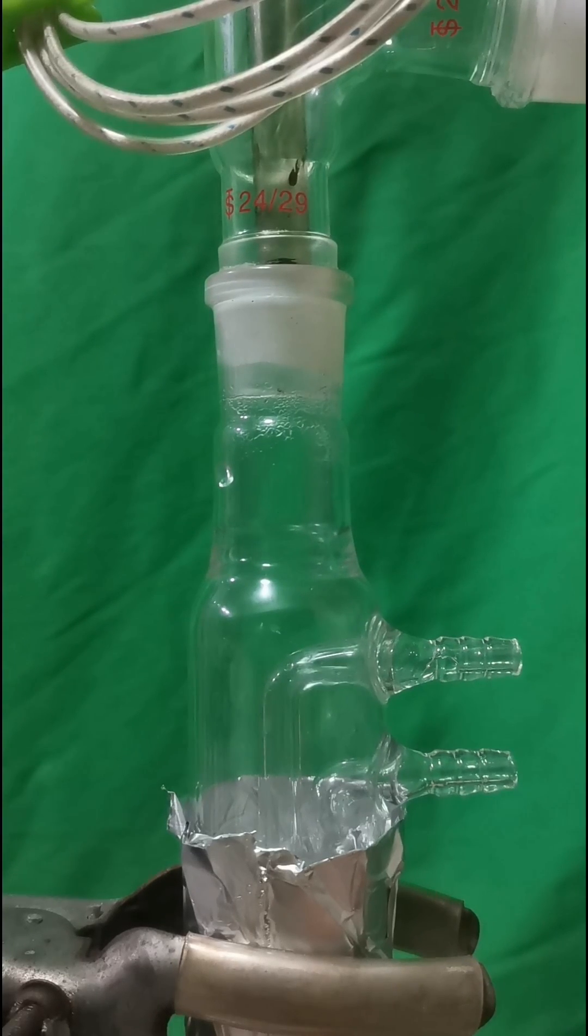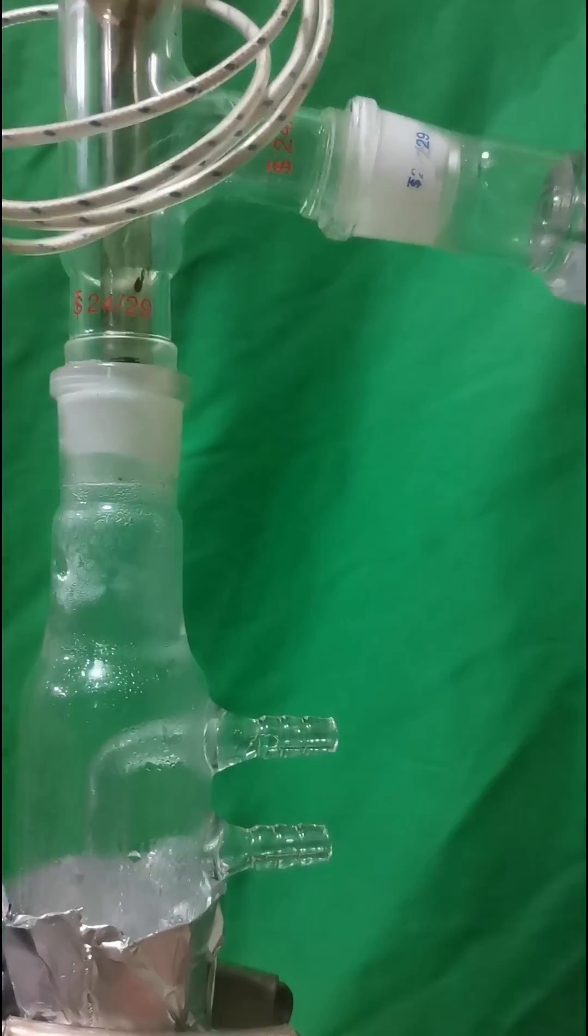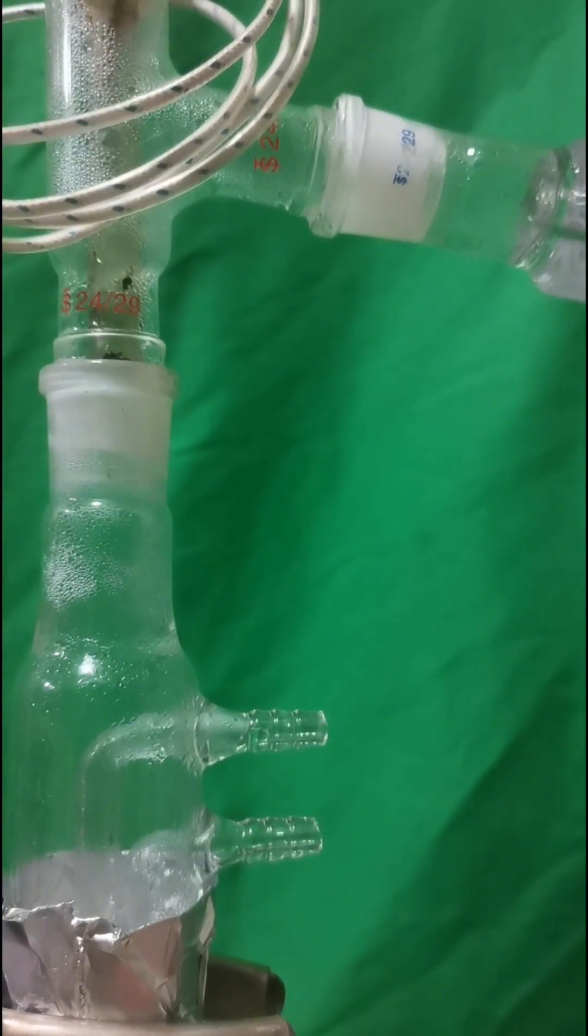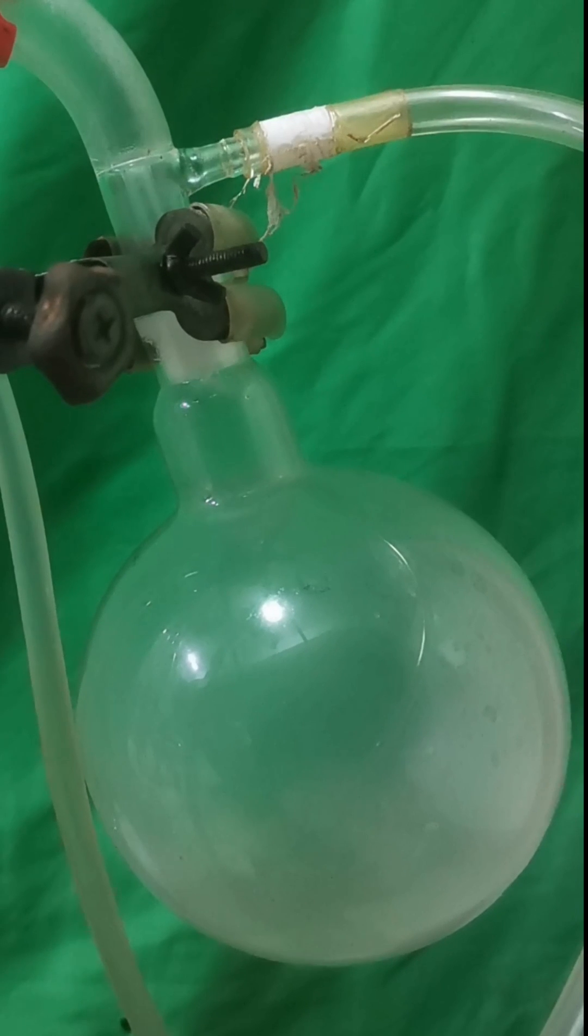As you can see, the reflux condenser can also be used as a distillation column. Some liquid appears. It should be water and a bit of hydrogen peroxide.